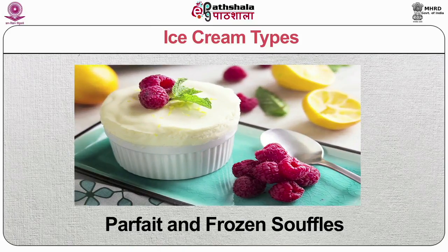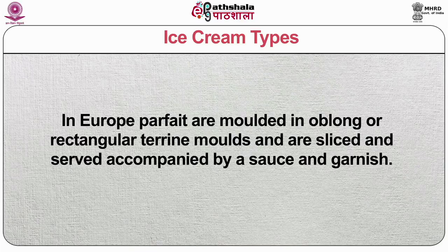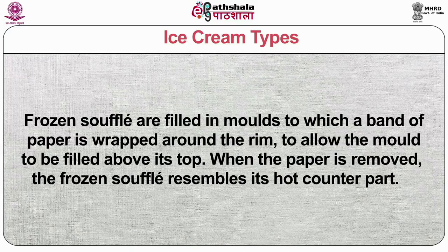The souffle mixture is most often based on a whipped egg yolk and sugar syrup foundation that is flavored and then lightened with whipped cream. In Europe, parfaits are molded in a blanc or rectangular terrine molds and are sliced and served accompanied by a sauce and garnish. In America, parfaits are often served as lightened or regular ice cream in tall narrow glasses, layered with various fruits, sauces or liqueurs and topped with whipped cream. Frozen souffles are filled in molds to which a band of paper is wrapped around the rim; when the paper is removed, the frozen souffle resembles its hot counterpart.